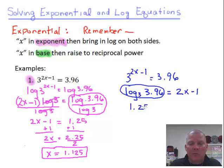Now, that number is a little familiar because that's the number we got when we originally divided log of 3.96 by log of 3. And those were base 10 instead of base 3. And that's going to equal 2x minus 1.